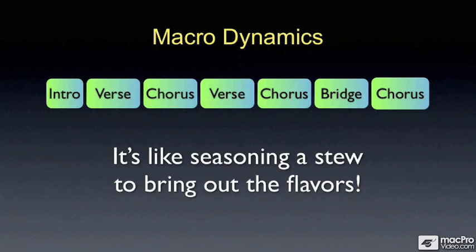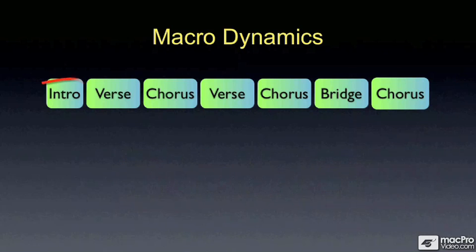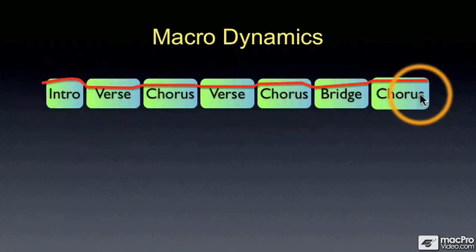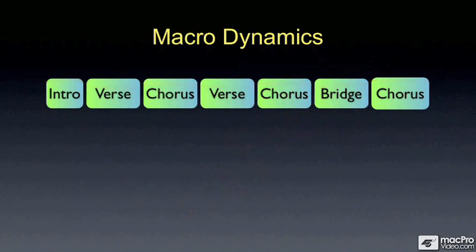Adjusting the macro-dynamics is kind of like seasoning a stew — you're there to bring out the natural flavors of this song. So let's pretend this is our hypothetical song: it has an intro that's kind of loud, then the verse gets a little softer, it builds to the chorus, it comes down a little in the next verse and builds to the next chorus, and then we have a bridge that builds and builds to the climax of the song. This is the emotional line of the song, and hopefully the dynamic line too. If it isn't, it's your job as the mastering engineer to bring it out.